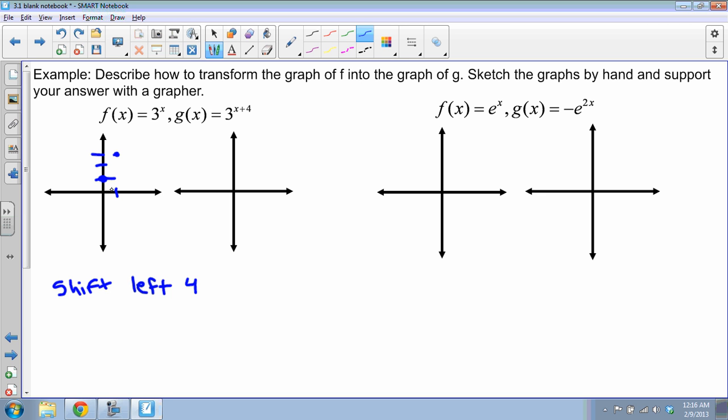As I go to the left, I get closer and closer to 0. As I go up and to the right, I keep going up, getting closer theoretically to infinity. If I just shift this left 4, then each of those points I just drew, I would move over to the left 4. So instead of at 0, 1, I would be at negative 4, 0. Instead of being at 1, 3, I'd be at negative 3, 3. Then I would draw my exponential curve.